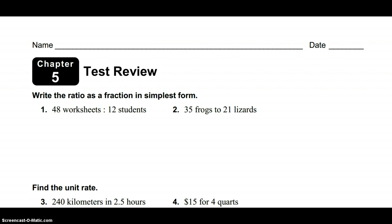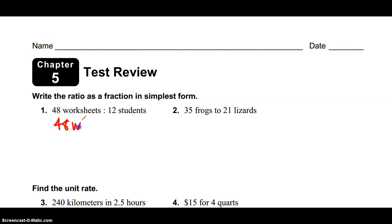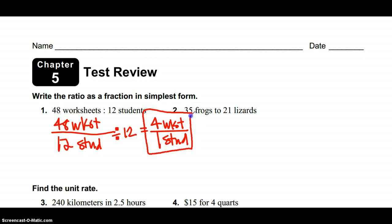Number 1 and 2, we're writing the ratios as a fraction in simplest form. This is 48 worksheets, and yes you can abbreviate as long as I know what it means, to 12 students. To simplify that, I've got to think of what's the biggest number that goes evenly in both of those, and the biggest number is 12. So this turns into 4 worksheets per 1 student. That is the answer to number 1. Number 2, 35 frogs to 21 lizards. The biggest number that goes evenly into both of those is 7, and that gives me 5 frogs over 3 lizards.